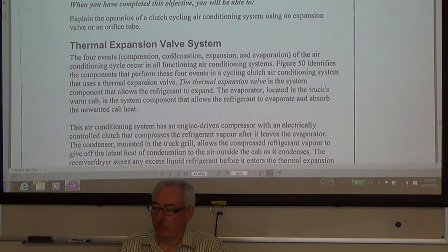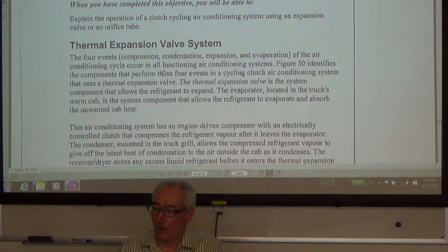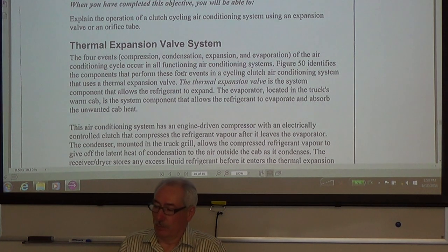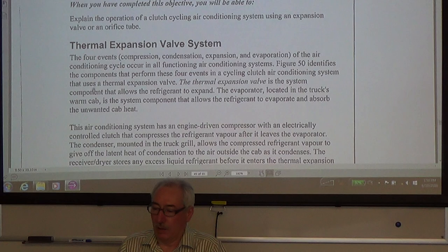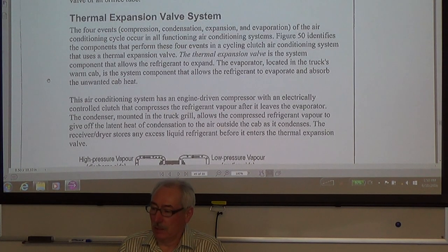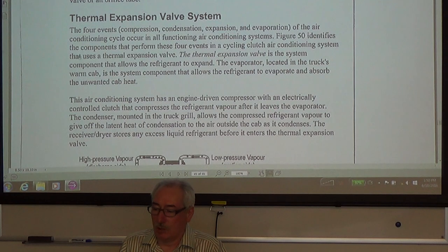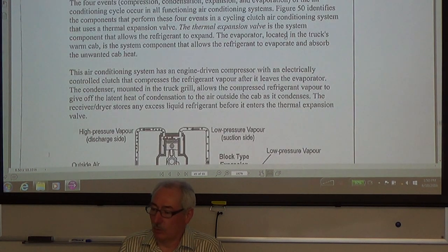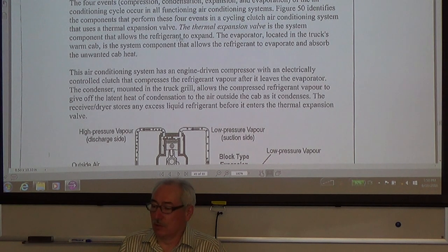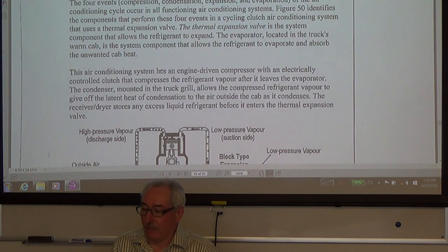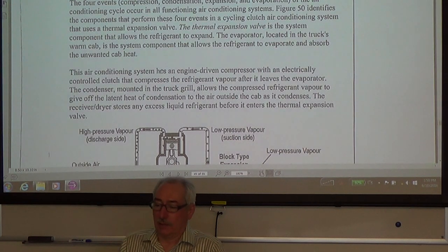So with the thermal expansion valve system, the four events of the air conditioning cycle occur in all functioning air conditioning systems. Figure 50 identifies the components that perform these four events in a cycling clutch air conditioning system that uses the thermal expansion valve. The thermal expansion valve is the system component that allows the refrigerant to expand and evaporate into the trucks. Warm cab is the system component that allows the refrigerant to evaporate and absorb the unwanted cab heat.